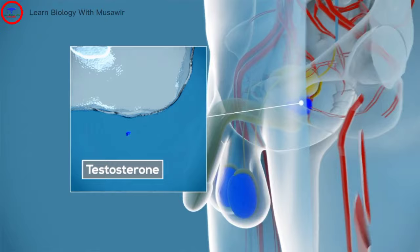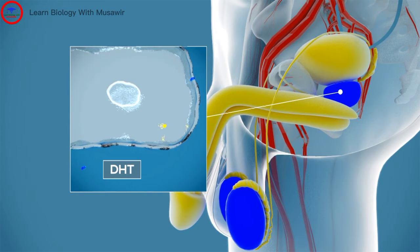In the prostate, testosterone is converted into another hormone called dihydrotestosterone, DHT, which can lead to prostate growth.